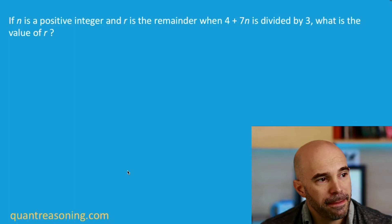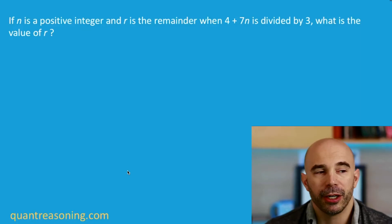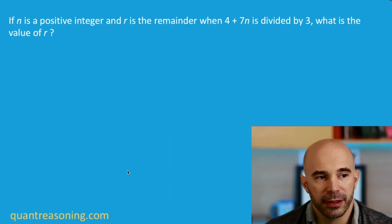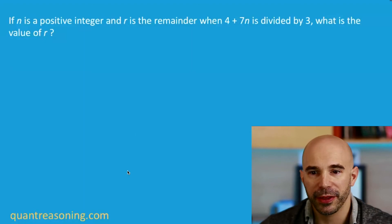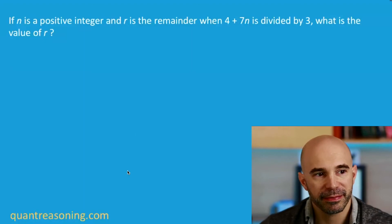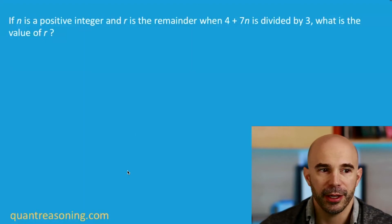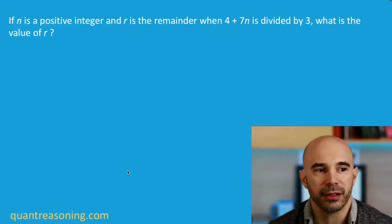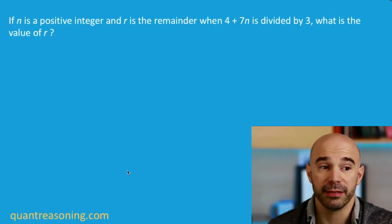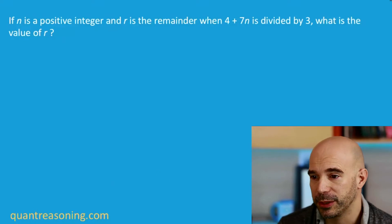If n is a positive integer and r is the remainder when 4 plus 7n, that whole thing, is divided by 3, what is the value of r? In other words, what's the remainder when we divide 4 plus 7n by 3? That's the question.